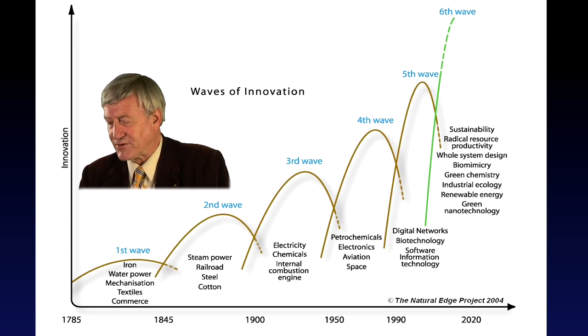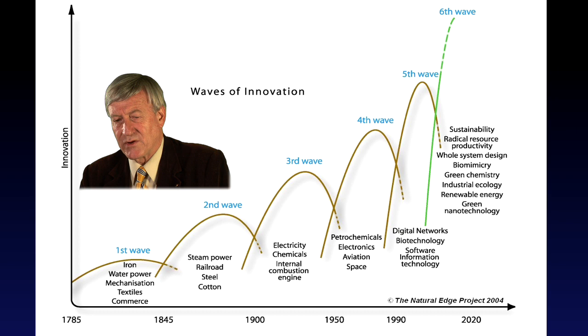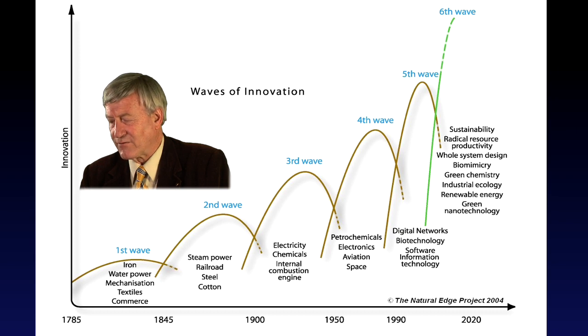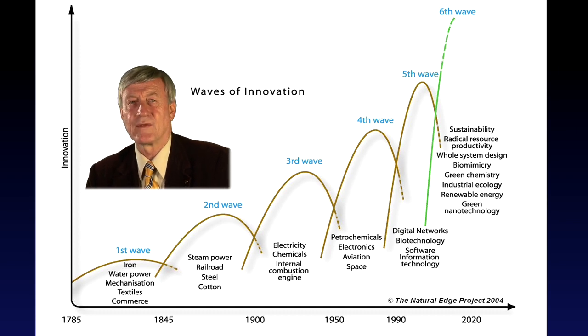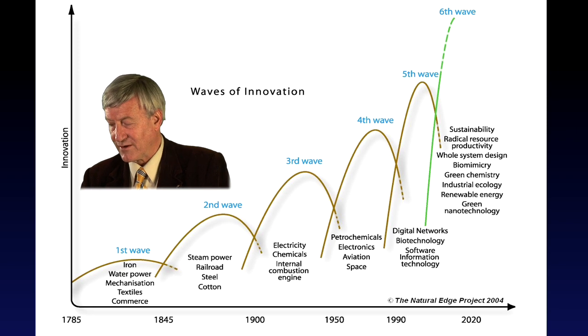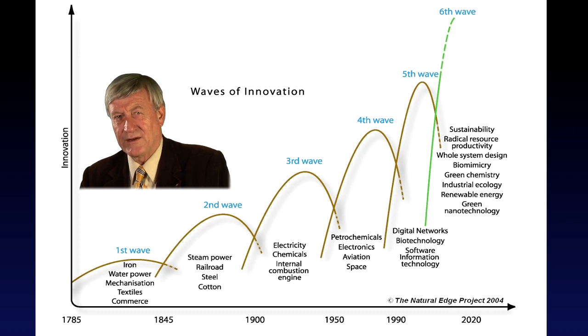The digital age has appeared as the fifth wave and in many ways is now merging into the sixth wave of sustainability. The issues set out there of radical resource productivity, whole system design, biomimicry, green chemistry, industrial ecology, renewable energy and green nanotechnology — these are new technologies, but they are fundamentally different in the kind of innovation they are drawing out of us. Environmental technology and information technology are coming together, giving us very clever ways of saving energy and water and reducing waste. We are just on the cusp of that kind of change as the technologies begin to appear.